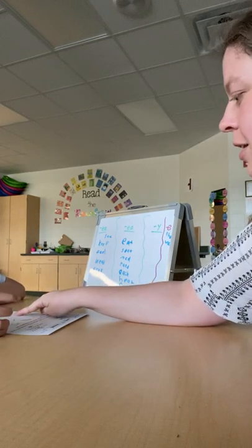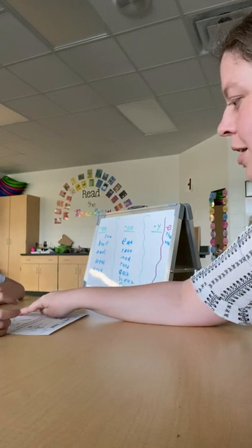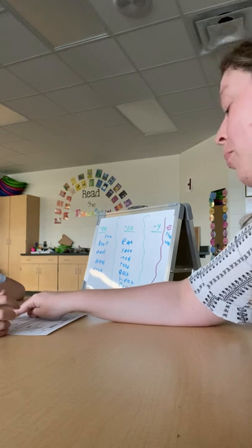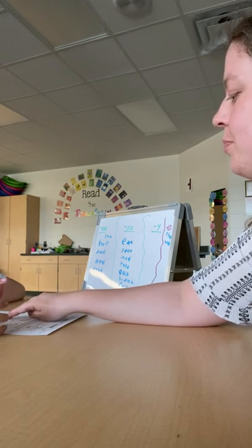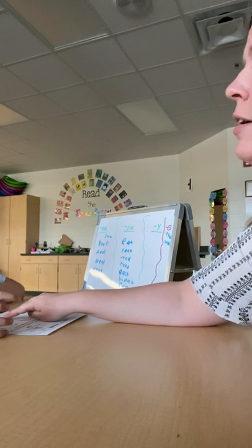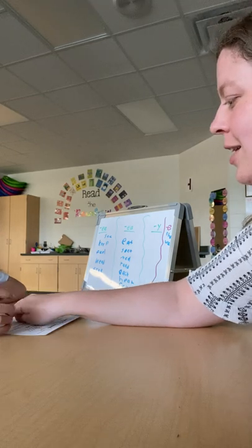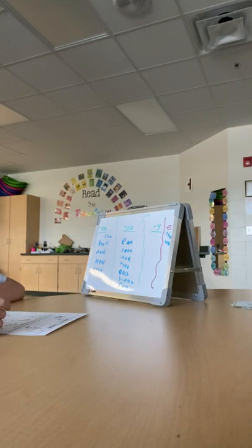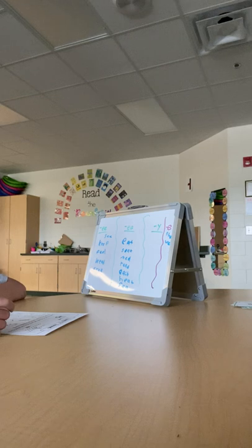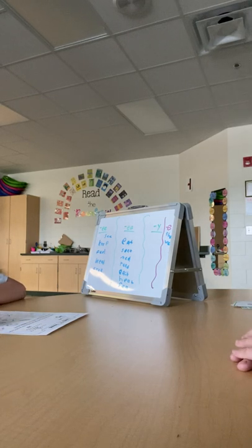All right. Ready? Tie. Tie. Or bow. They're nice and fluffy in the sky. Cloud. Leaf. Ball. Which one has that long E sound? Leaf. Excellent.